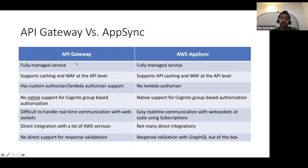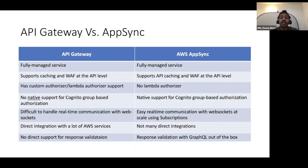API Gateway supports Lambda authorizer or custom authorizer, which is a Lambda function triggered as the first point of contact to run authorization logic. But in AWS AppSync, we don't have a Lambda authorizer — that's a little less flexibility. However, there's a really good advantage in the next point.